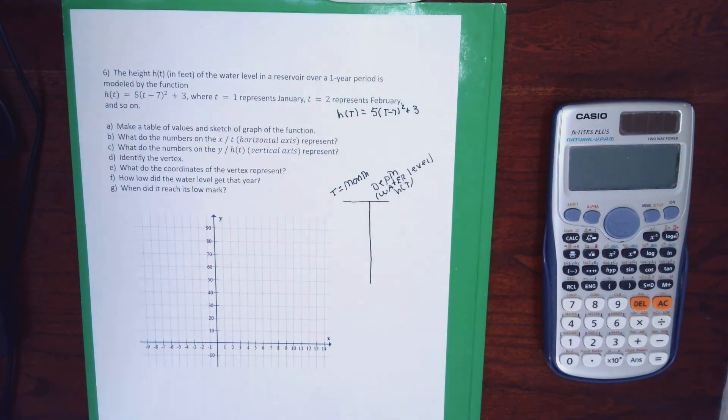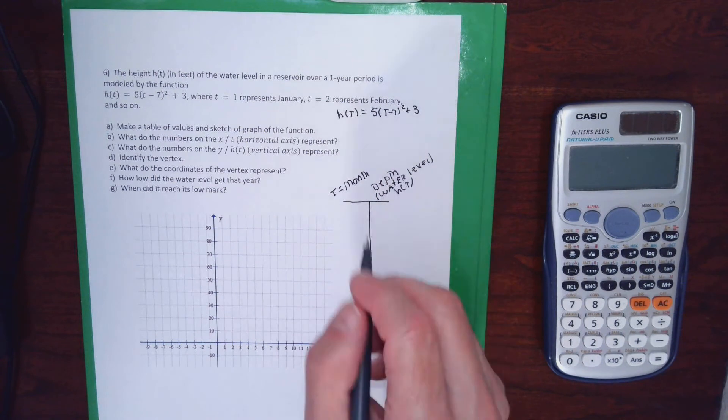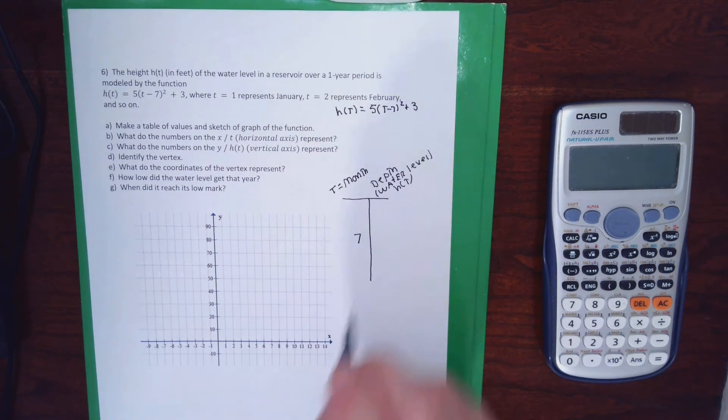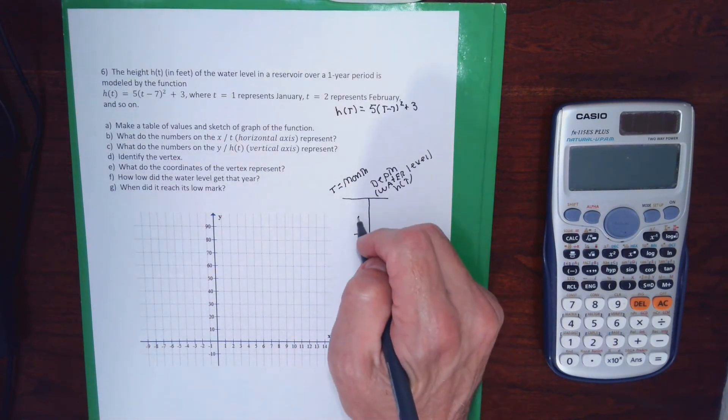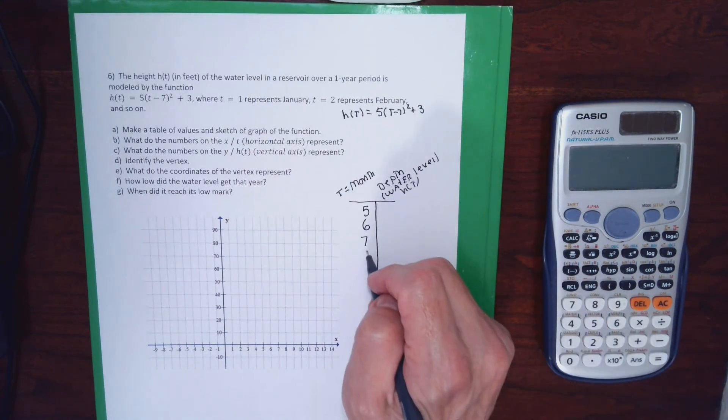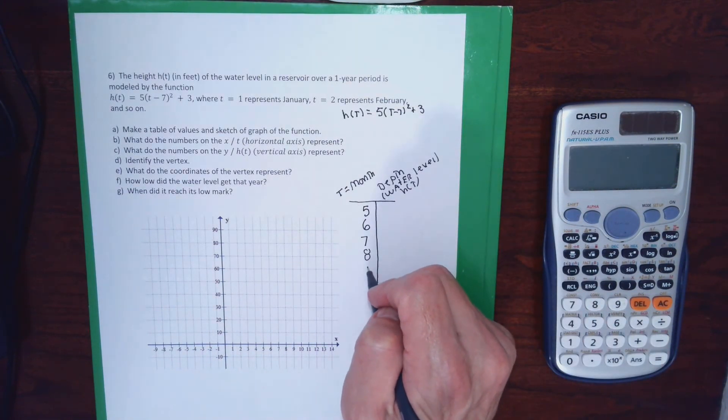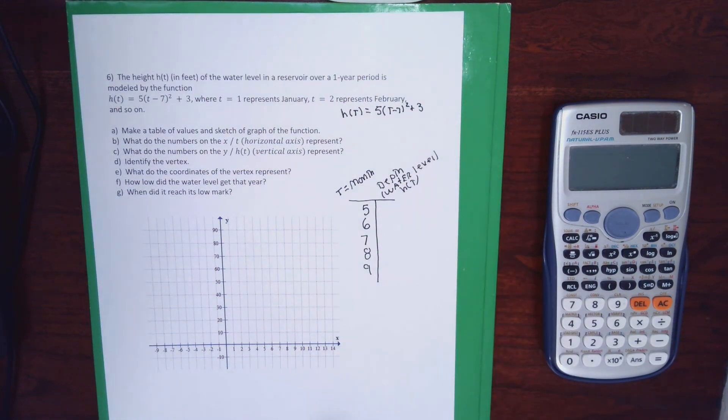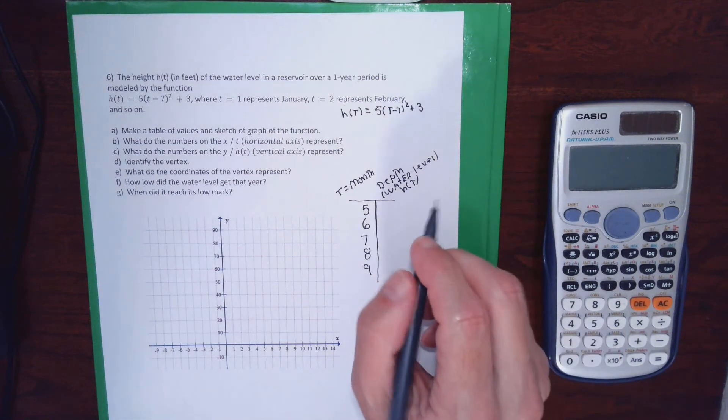So this function, the variable to the right of the equal sign is a month. The variable to the left of the equal sign is how deep the water is. And so I'm going to make a table of values and graph the function 5 times the quantity T minus 7 squared plus 3. This is the friendly kind of problem. I could inspect and get the table because it's written in standard form. So I'm going to change the sign of the T minus 7 and put a 7 in the middle of my X column. That 7 stands for July. I'm going to go backwards and write a 6, which stands for June, a 5 which stands for May. And then an 8, which stands for August, and a 9 that stands for September.